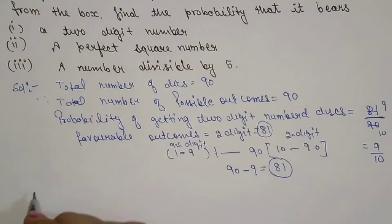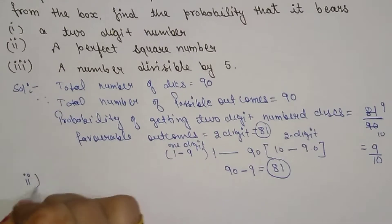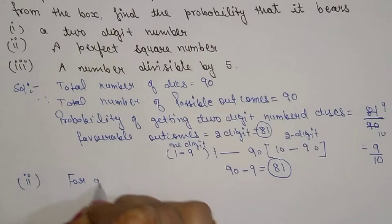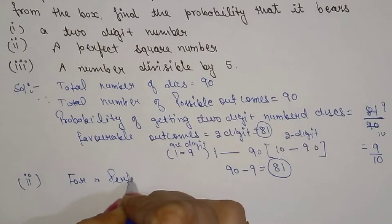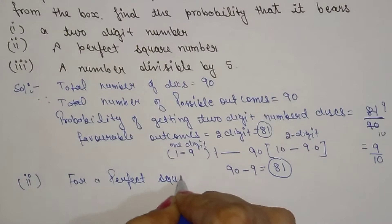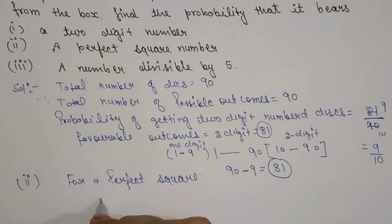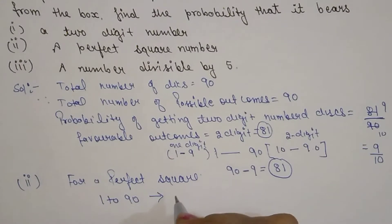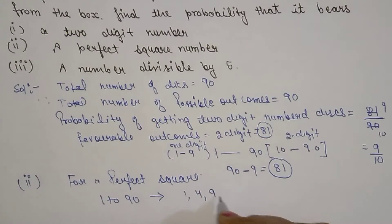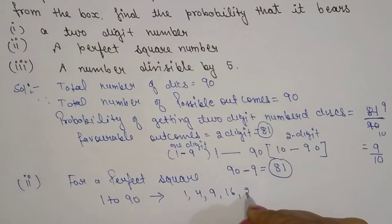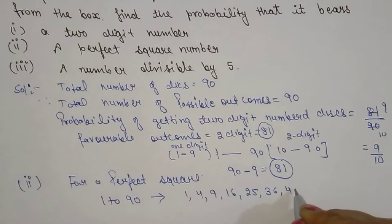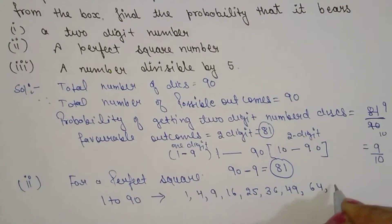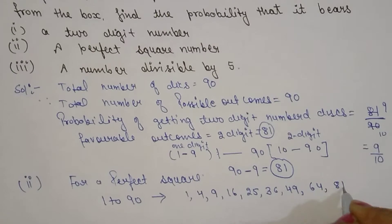Now come to the next part: probability of getting a perfect square number. For a perfect square, we need to find all perfect squares from 1 to 90. These are: 1 squared = 1, 2 squared = 4, 3 squared = 9, 4 squared = 16, 5 squared = 25, 6 squared = 36, 7 squared = 49, 8 squared = 64, 9 squared = 81. That's all of them within the range.